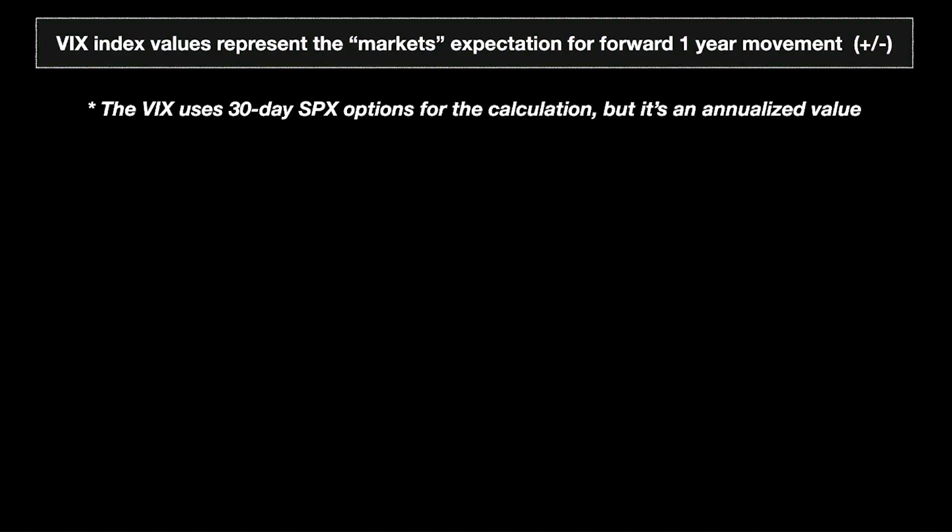The VIX index basically represents the market's expectation for forward one-year movement. Something that confuses a lot of people is that the VIX is often talked about as a forward one-month volatility — and that is true. It is based on S&P 500 options, using a full strip of 30-day out-of-the-money and in-the-money options to calculate the VIX value.